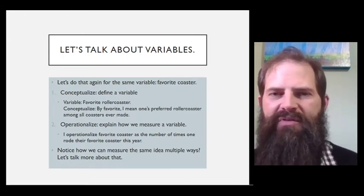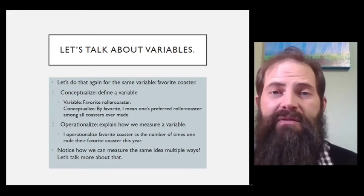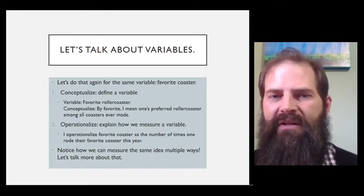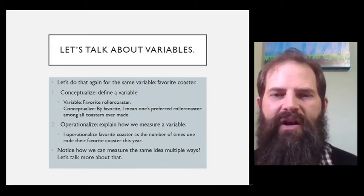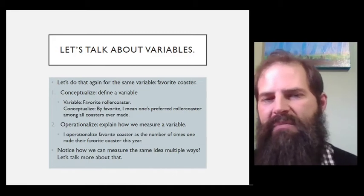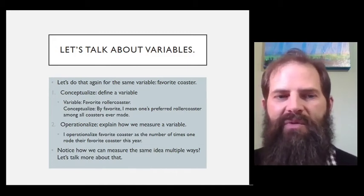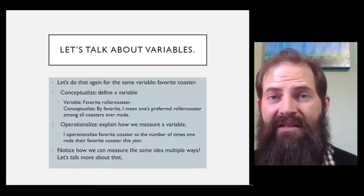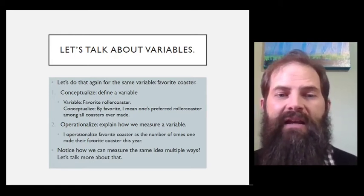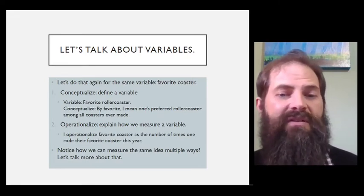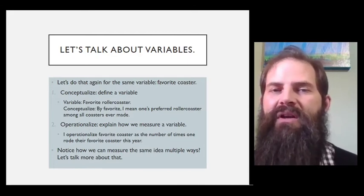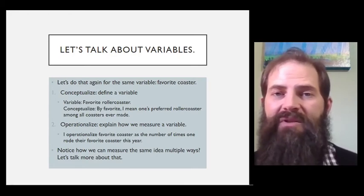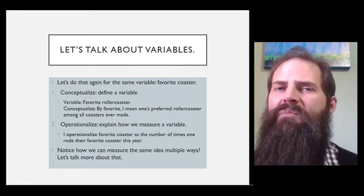Now let's take these same variables and let's measure them a different way so that we can see that you can actually be the person who decides how you're going to measure the variables that you use in your study. Let's use the same variable favorite roller coaster again. Now let's conceptualize this. Let's say that by favorite roller coaster, I mean one's preferred roller coaster amongst all the coasters that have ever been made. So as that previous one was kind of maybe narrowed down to within a park, now we're saying favorite coaster can be every coaster that ever existed. It really widens things out, right? And so we can say now that we're going to operationalize that as being the number of times one rode their favorite coaster this year. Again, notice that we can take the same ideas and measure them a little differently and that's okay. There are limits to that. In fact, let's explore the limits of that.